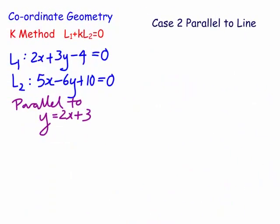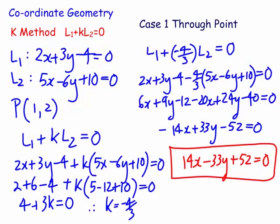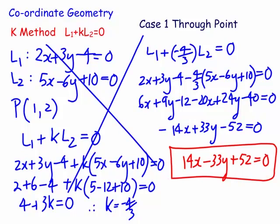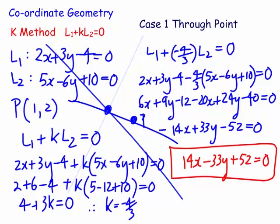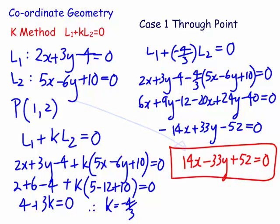Just to recap the previous case with a picture: we've got line 1 and line 2 with a point of intersection, and another point P, and we've found the equation of the line through both of those. Sometimes a little picture is worth a thousand words.